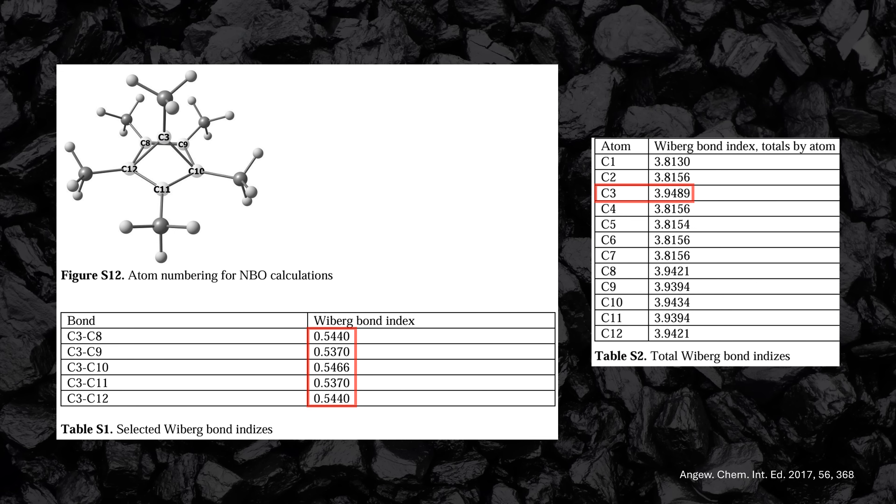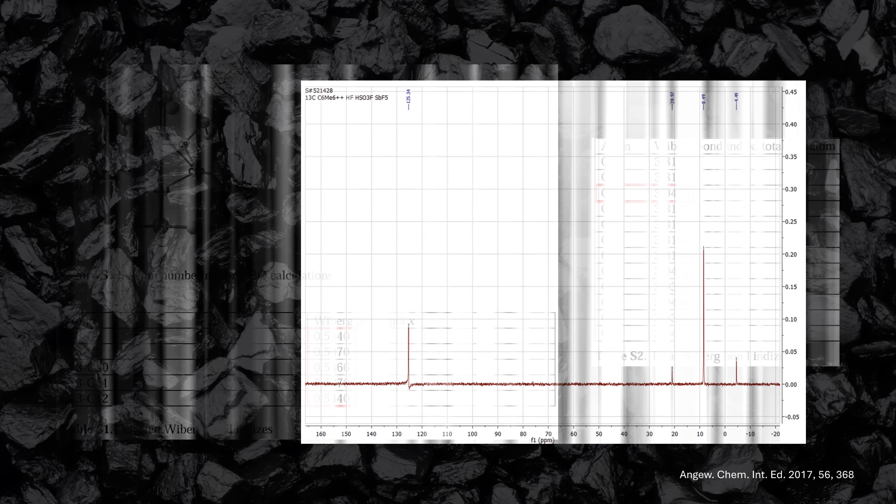In total, the apical carbon experiences just below 4 bond equivalents. This means that just because it's hexacoordinated does not mean it's hexavalent. By the way, the carbon NMR spectrum is pretty interesting.